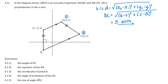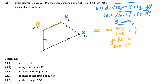Question 4.1.2 asks us to determine the equation of line AD. I need the gradient and a point. The gradient between A and D is (3 minus 5) over (negative 2 minus 2), which simplifies to one half. So y equals one half x plus c. Substituting point D (2, 5): 5 equals one half times 2 plus c, giving c equals 4. Therefore, the equation of the line is y equals one half x plus 4.